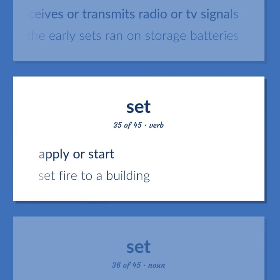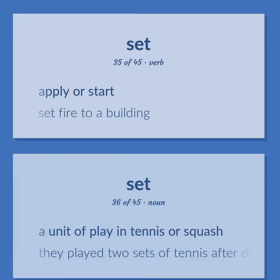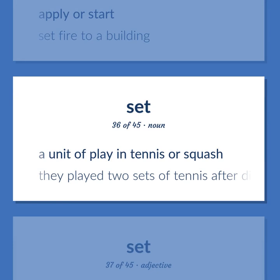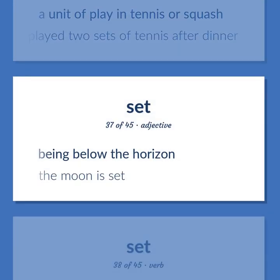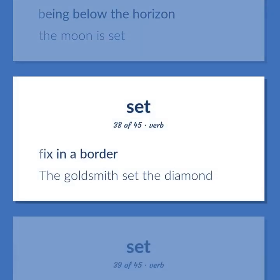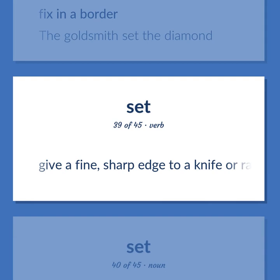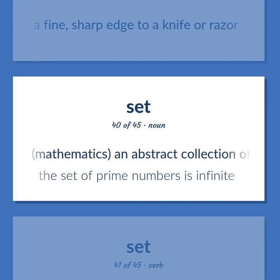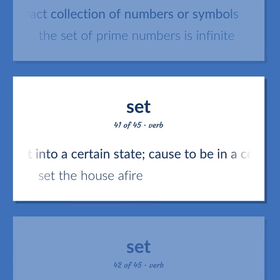Apply or start. Example: Set fire to a building. A unit of play in tennis or squash. Example: They played two sets of tennis after dinner. Being below the horizon. Example: The moon is set. Fix in a border. Example: The goldsmith set the diamond. Give a fine, sharp edge to a knife or razor. Mathematics: an abstract collection of numbers or symbols. Example: The set of prime numbers is infinite. Put into a certain state; cause to be in a certain state. Example: Set the house afire.